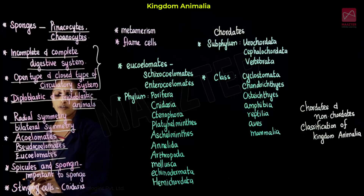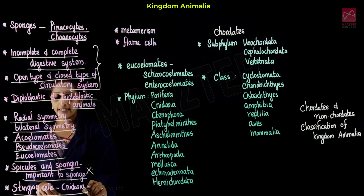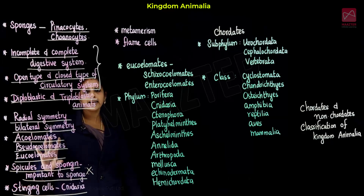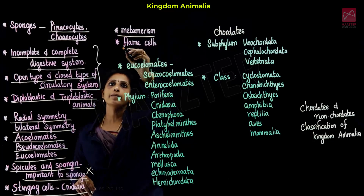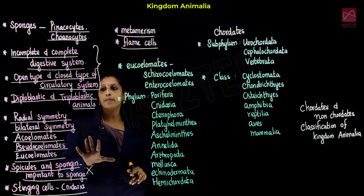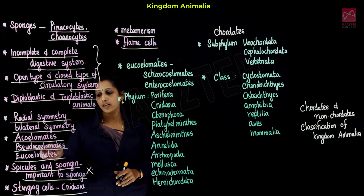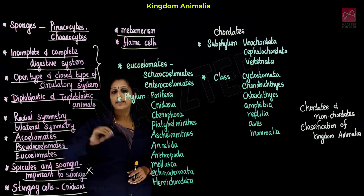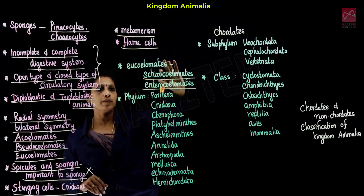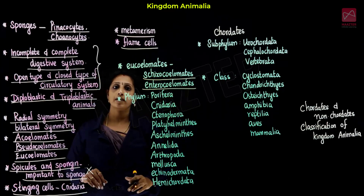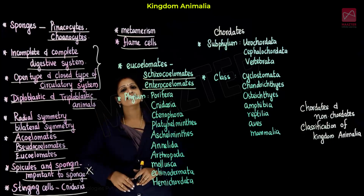Why spicules in sponges are important — this is another important question from the book back. Similarly, stinging cells — Cnideria is considered as having stinging cells — why? So this answer is a two mark question. Then similarly metamorphism — earthworm level metamorphism. Similarly, flame cell — what is meant by flame cell? So, two mark question. Then three mark questions.